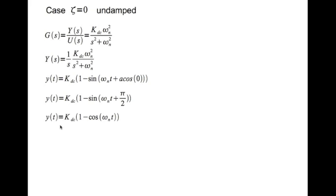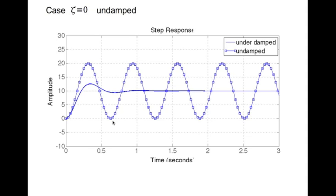The result is 1 minus a sine term, and noting that a cosine of 0 is pi/2, in fact y(t) simplifies to K_dc times (1 minus cos(omega_n * t)). And if you plot that, this is how it looks.